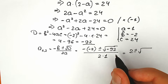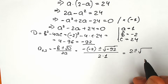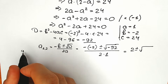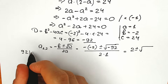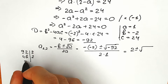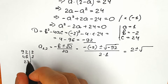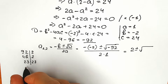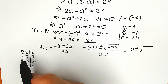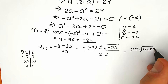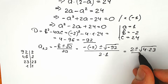Let's simplify. We have 2 plus or minus square root of minus 92, all over 2. Now, 92 can be factored: 92 = 2 × 2 × 23, in other words 4 times 23. So we rewrite it as square root of (4 times 23) divided by 2.